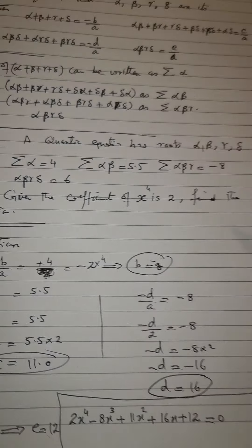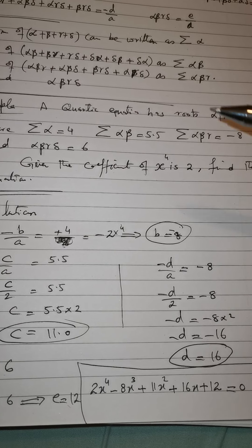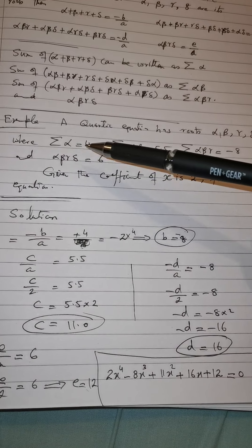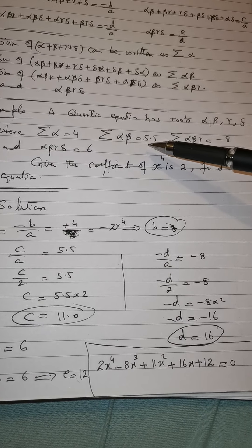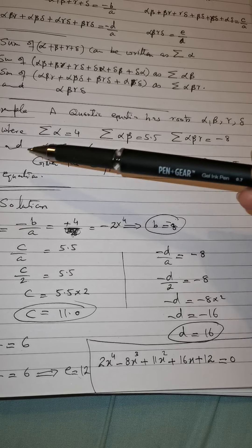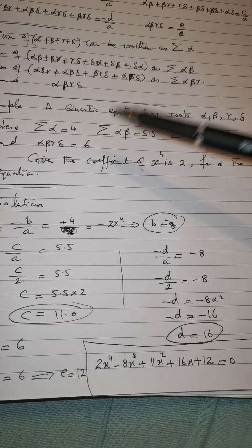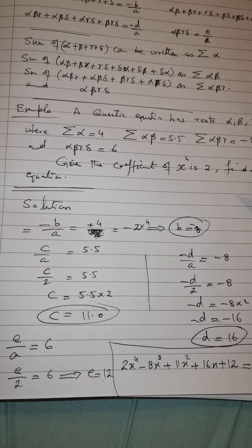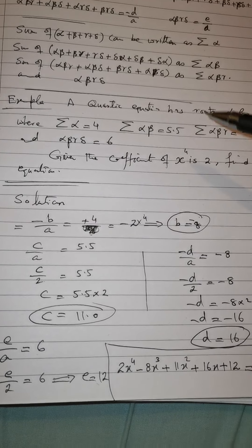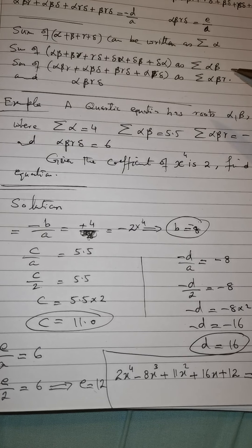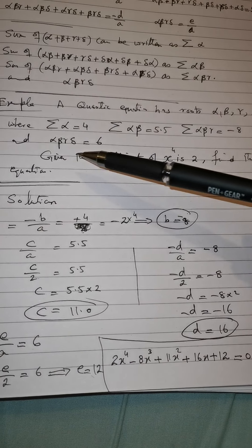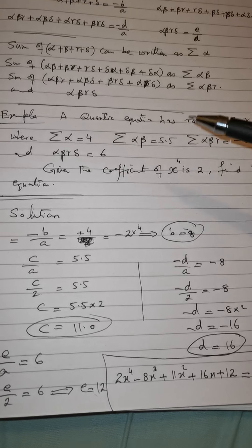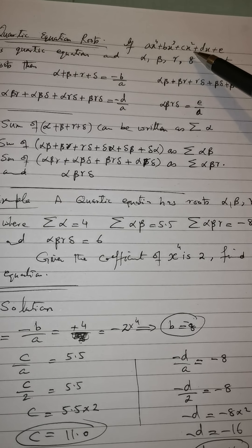Now let's see how we can solve an example. In this question a quartic equation has roots alpha, beta, gamma, delta where: Σα = 4, Σαβ = 5.5, Σαβγ = −8, and αβγδ = 6. The coefficient of x⁴ is given as 2. We need to find the quartic equation. Using these summations we can find the values of a, b, c, d, and e.